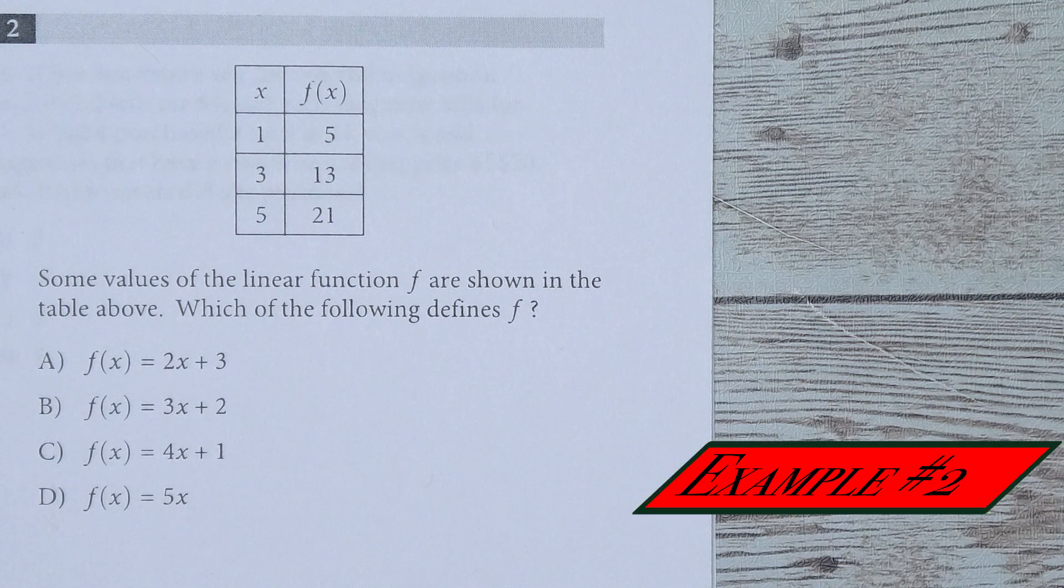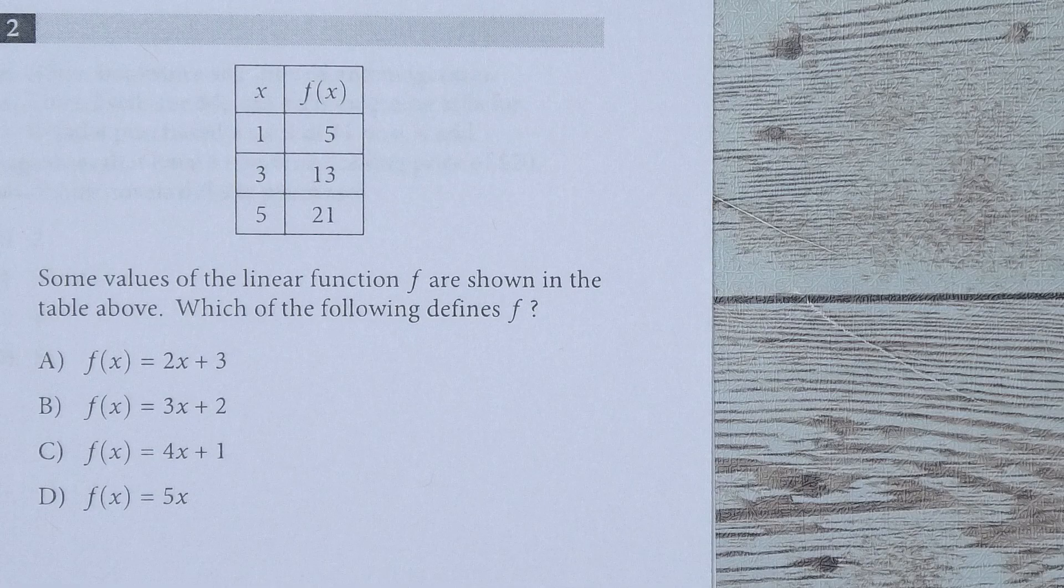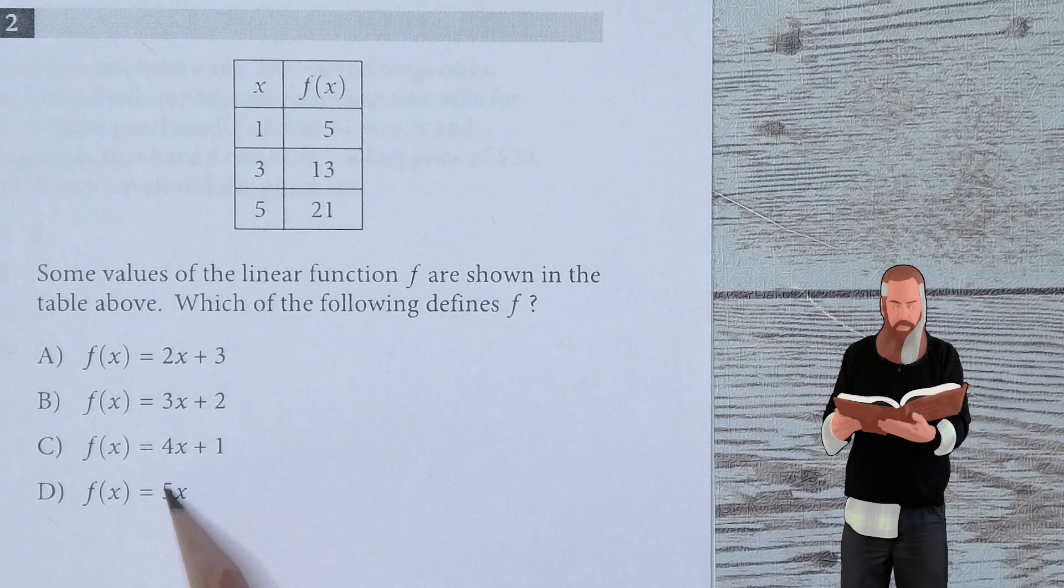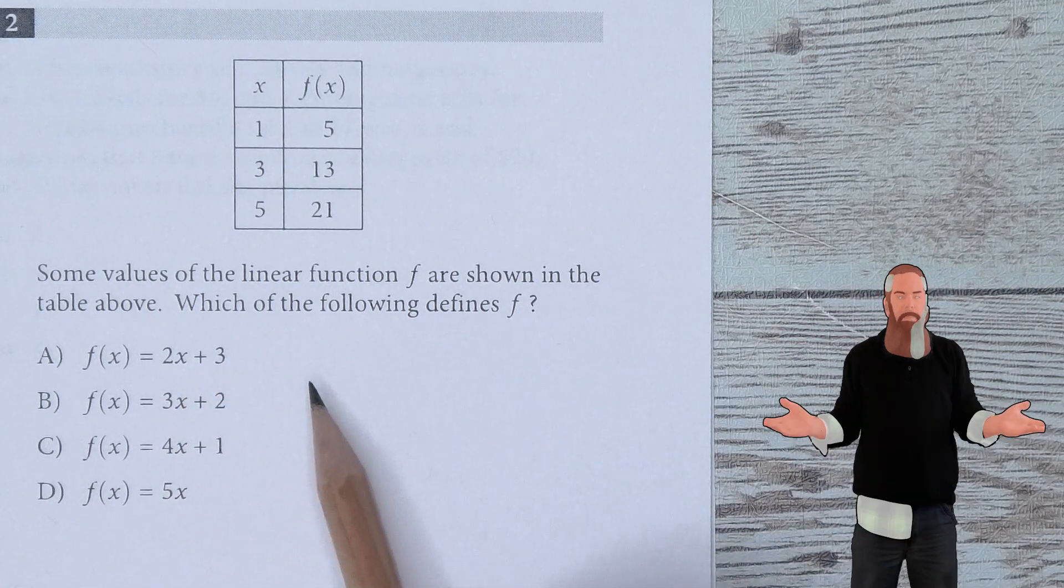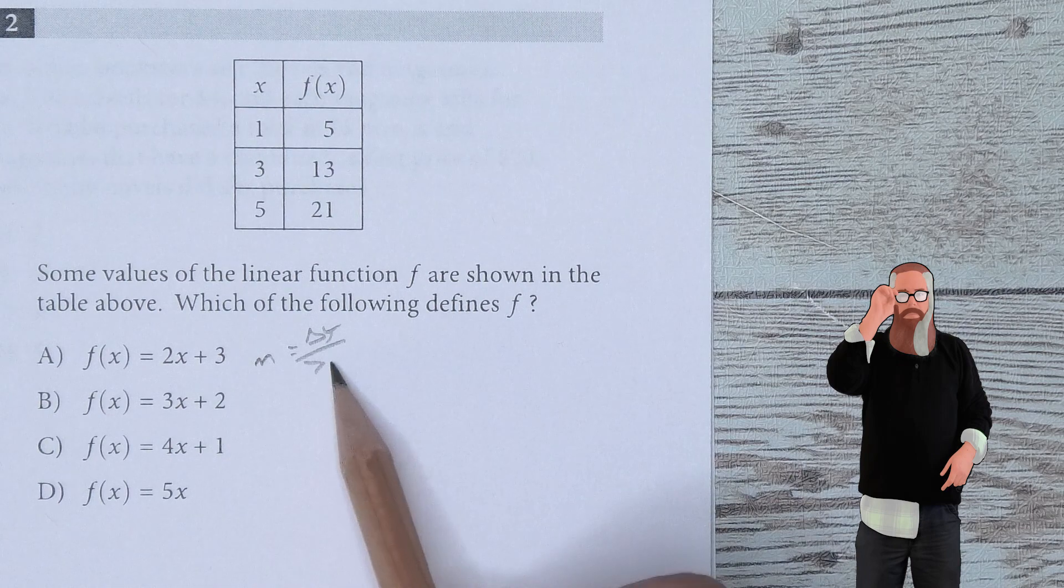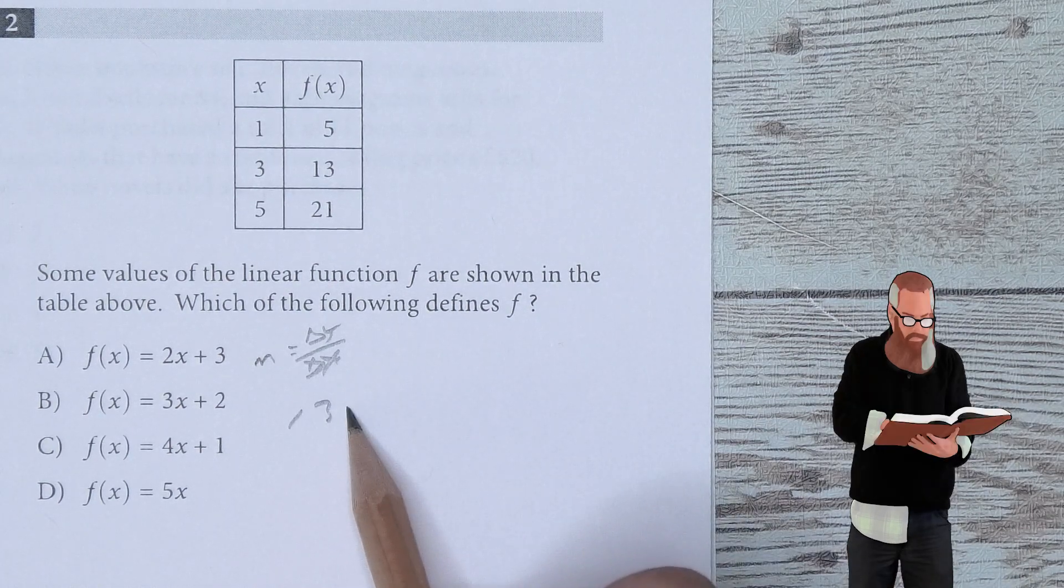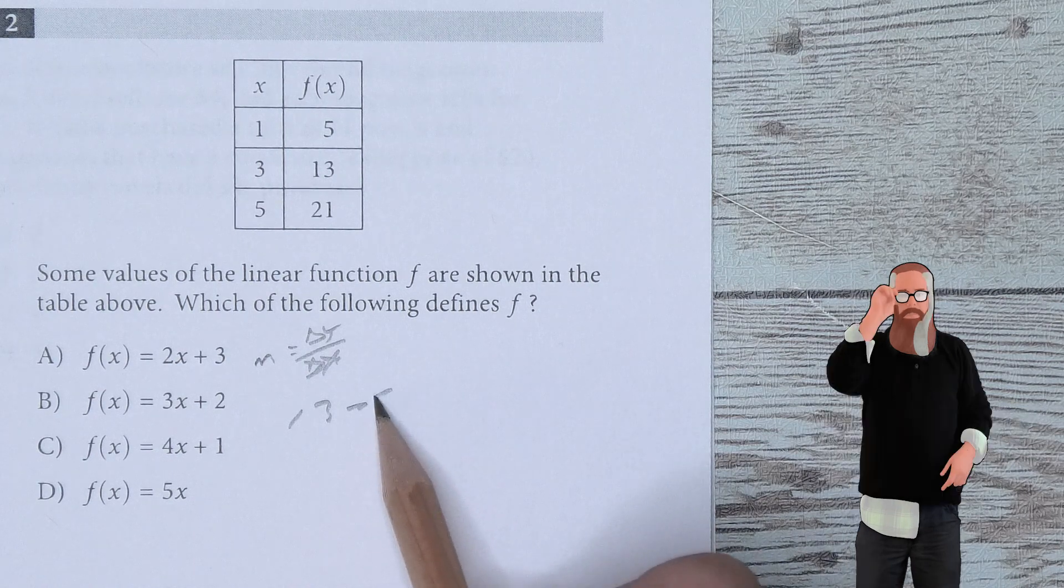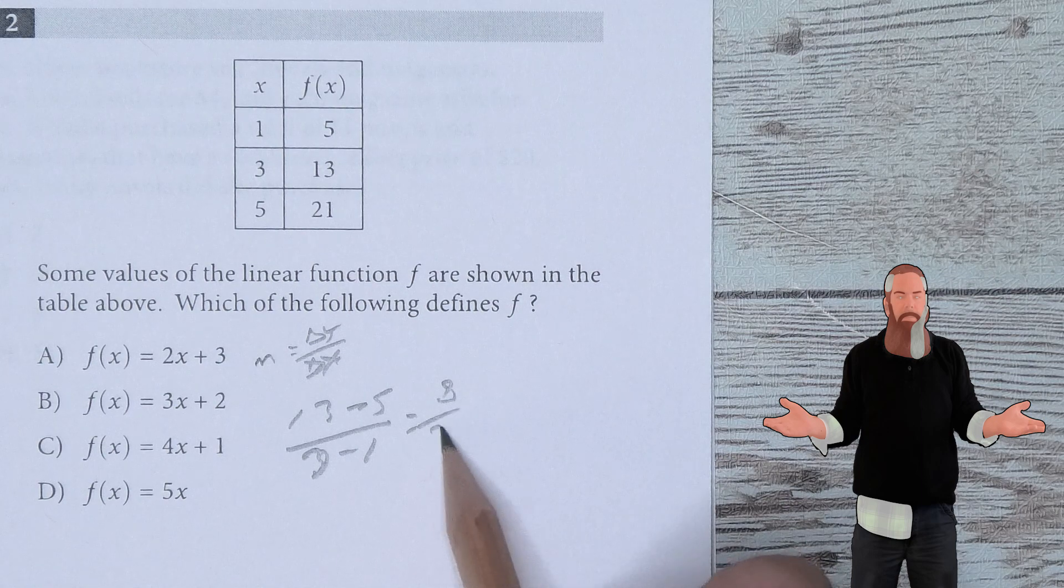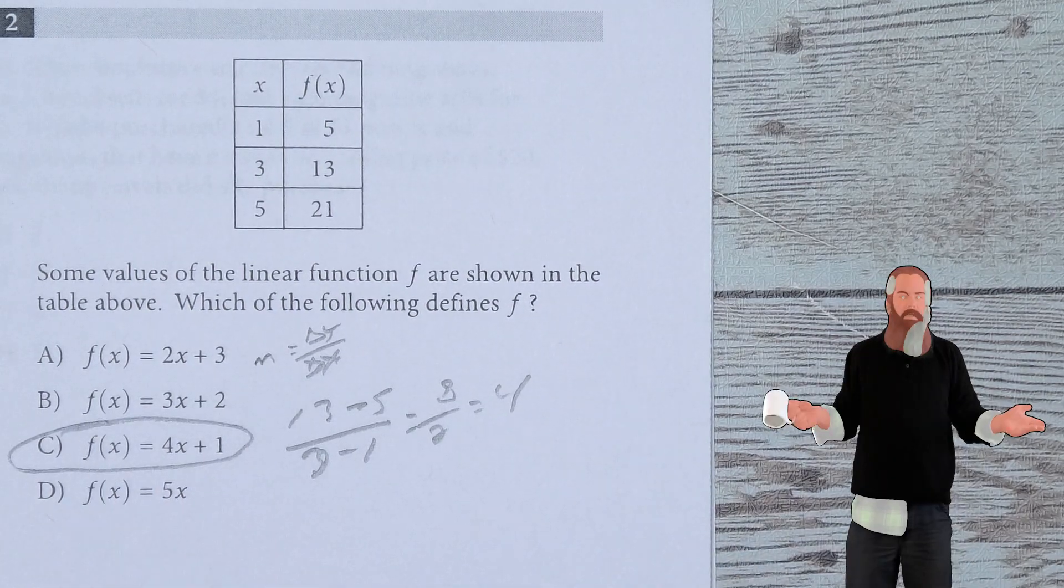Some values of linear function F are shown in a table above. Which of the following defines F? Let's look at slope being the change of Y over change in X. I can look at 13 minus 5 over 3 minus 1, which gives us 8 over 2, which is a slope of 4, so C is the answer.